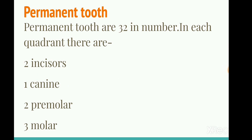Permanent teeth. Permanent teeth are 32 in number. In each quadrant there are two incisors, one canine, two premolars, and three molars.